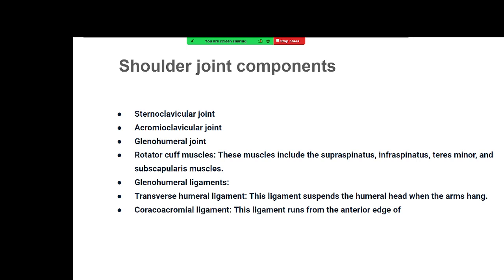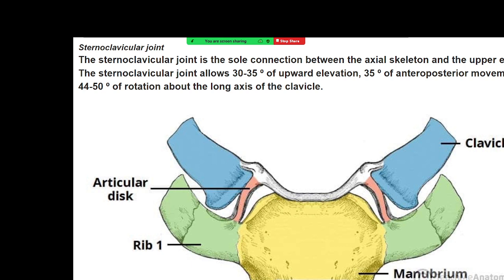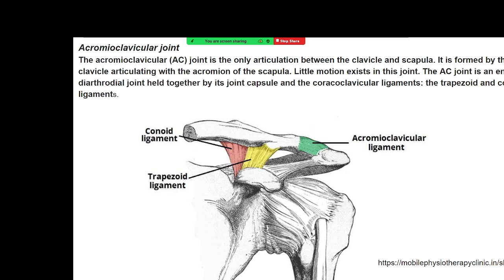These joints have a unique structural entity. The rotator cuff muscles — supraspinatus, infraspinatus, teres minor, and subscapularis — give support and stability. The glenohumeral ligaments, transverse humeral ligaments, and coracoacromial ligaments together form the complex structure. The sternoclavicular joint is the fundamental joint connecting the axial skeleton to the shoulder, with the clavicle as the only bony connection, allowing 30–35 degrees of upward elevation and 35 degrees of anterior-posterior movement.